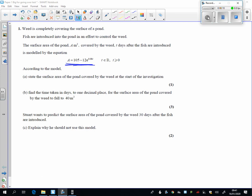find out at the start, of course the start is at t equals 0, and so what I'm going to do, I'm going to put a equals 105, take away 12, e to the 0. Of course we know that e to 0 is 1, so I've got 105, take away 12, which is 93.